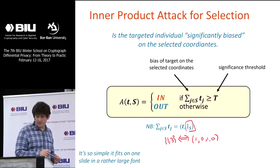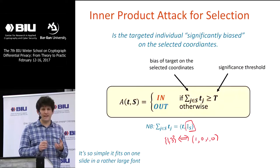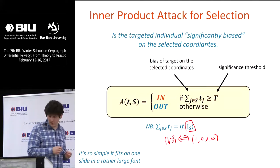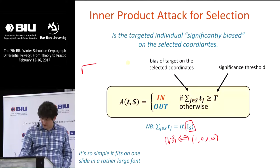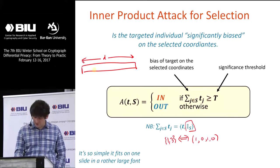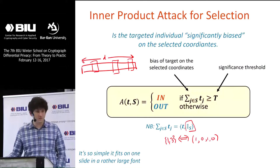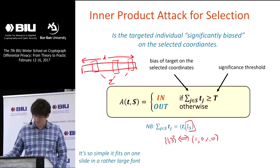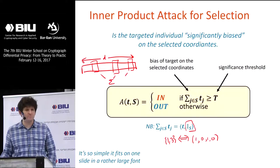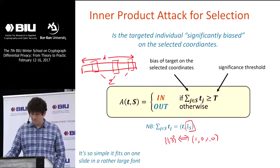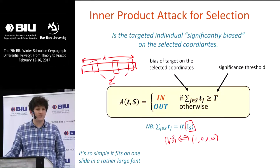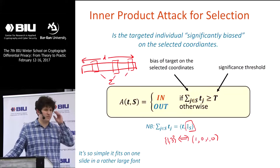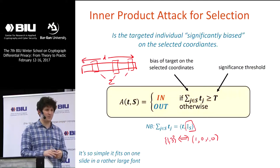The attack works similarly to what we had before, but we have to modify it because I don't have numbers — I don't have the mean of anything. I just have the names of the columns. The attack is actually even simpler: you get your target individual, some long D-bit vector of data, and you just pick out the columns you were told were interesting and sum up the bits in those columns. You ask yourself, is it big or is it small, relative to some significance threshold. Intuitively, if these are large columns of the dataset, then people who are in the dataset should give you large values on those columns — larger values than people who are not in the dataset.